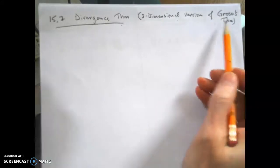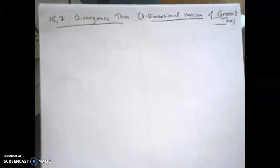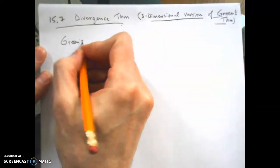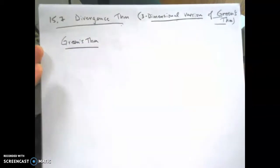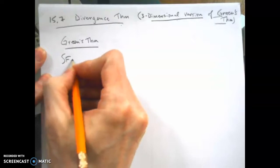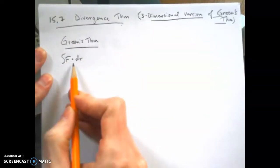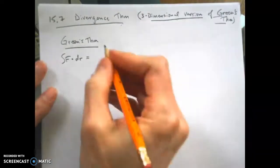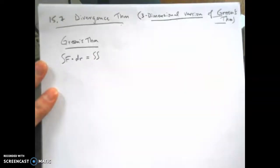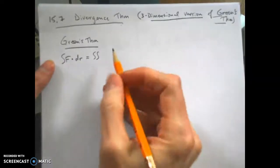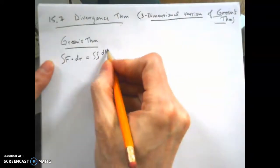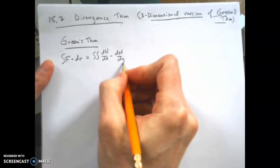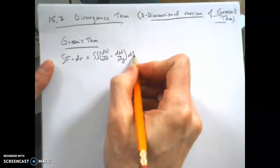Alright, so real quick, let's just review for a second what Green's Theorem says. Green's Theorem says that when you have the integral of F dotted with dr, and that's a line integral of a vector field, another way you can calculate rather than calculating it directly is by doing a double integral of the quantity dN/dx minus dM/dy over an area.